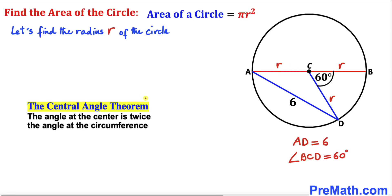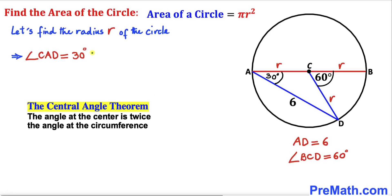Now let's recall the central angle theorem. According to this theorem, the angle at the center is twice the angle at the circumference. We know the angle at the center is 60 degrees, so the angle at the circumference is going to be half of 60 degrees, which is 30 degrees.